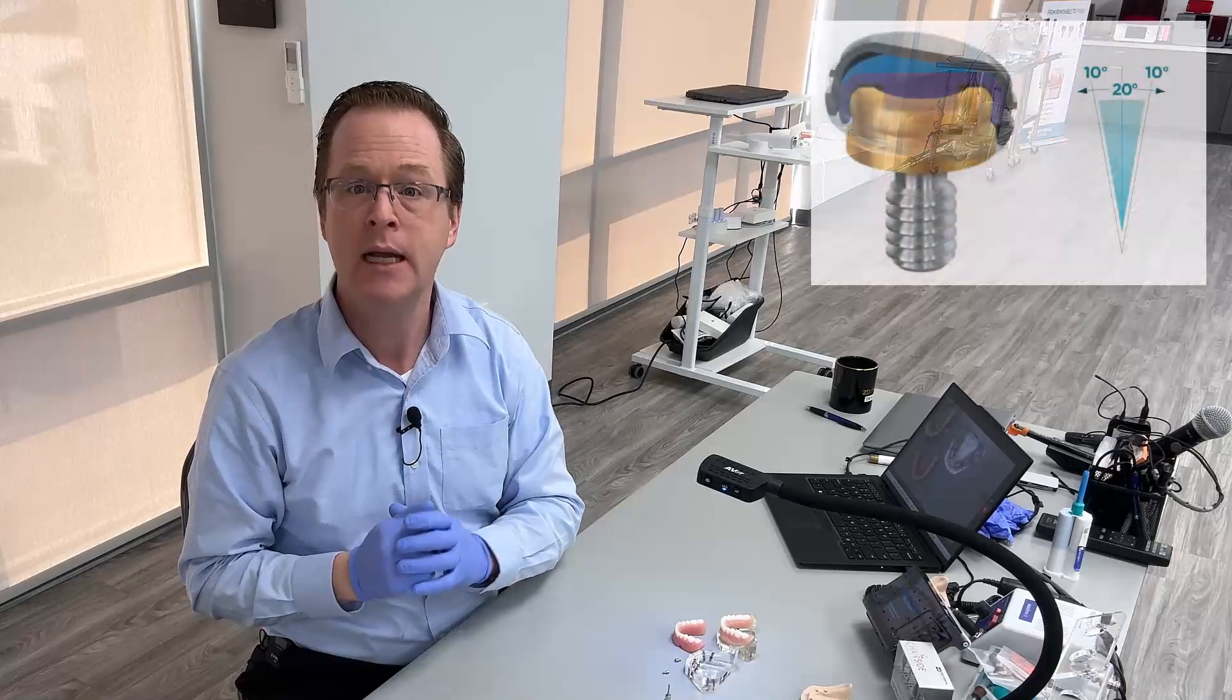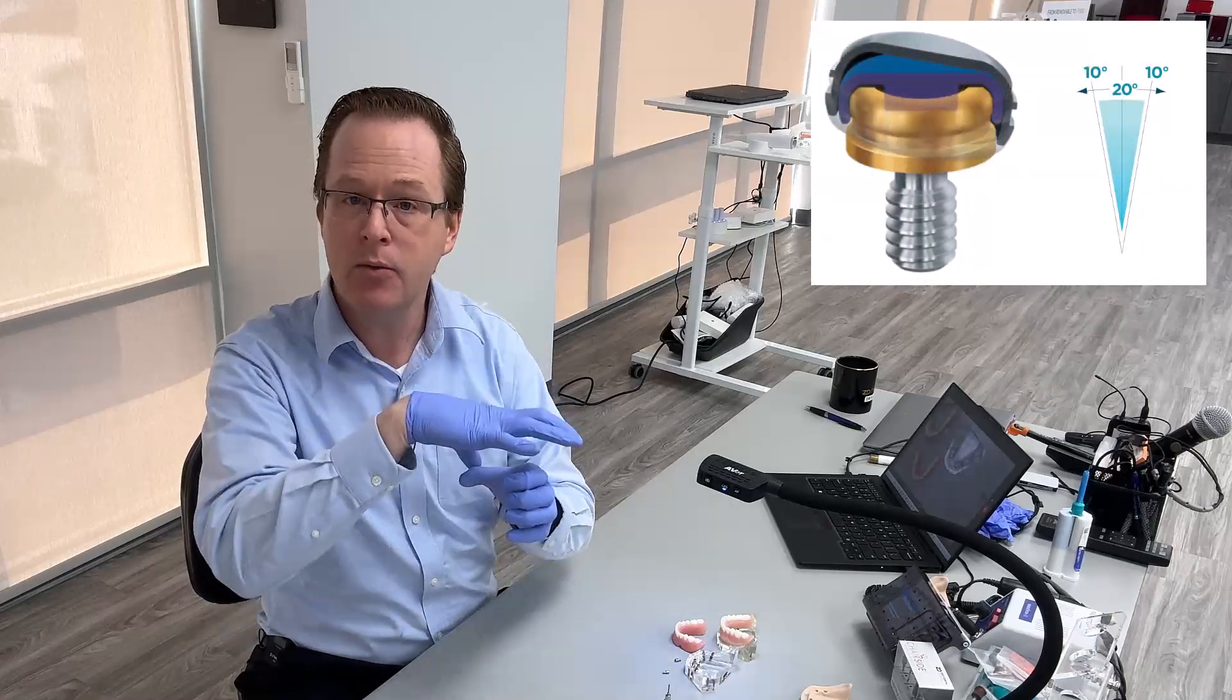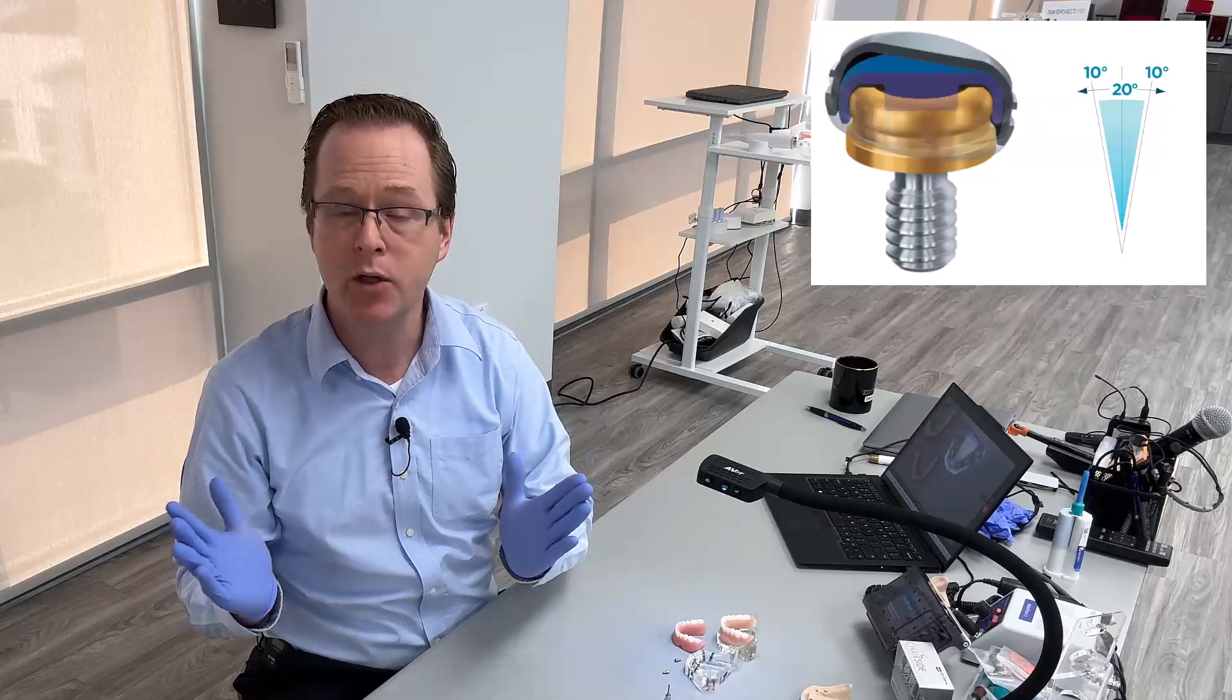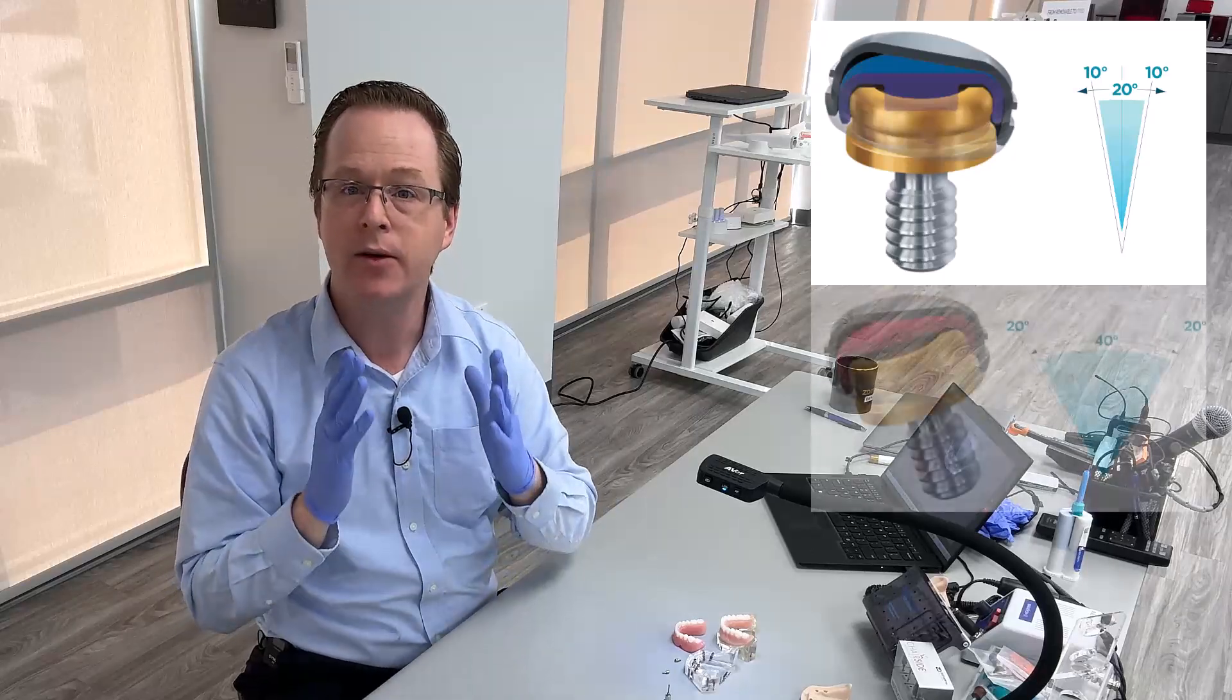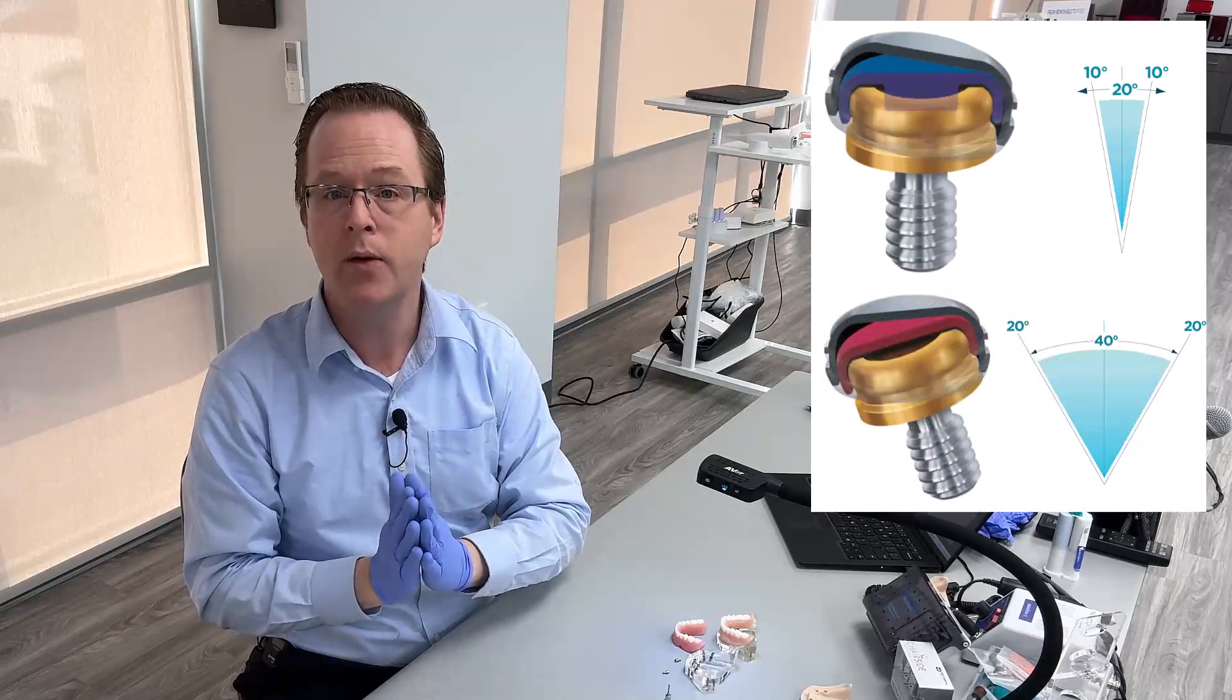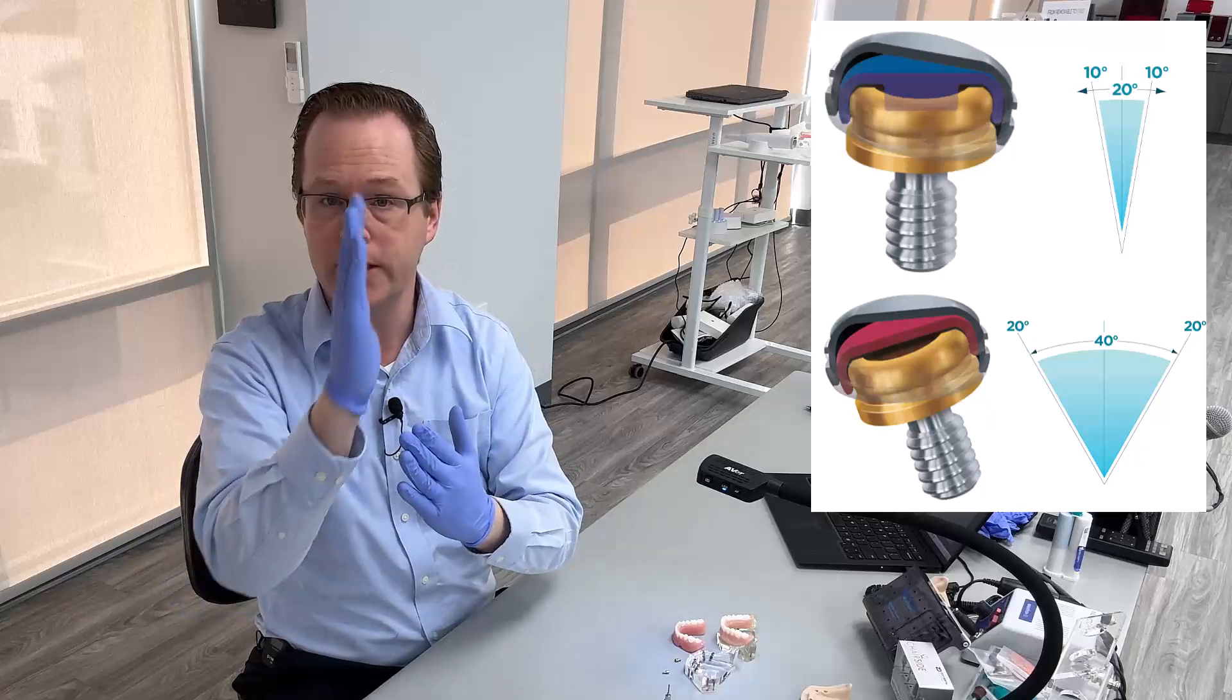Any angulation that you would have to compensate for your original locator, your non-angled locator, is done by the housing as well as the insert. So your standard range inserts you can correct up to 20 degrees of total angulation correction or 10 and 10 degrees between implants and your extended range inserts with the original locator, you can do up to a total of 40 degrees or 20 degrees between implants.